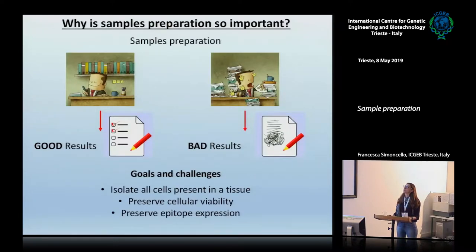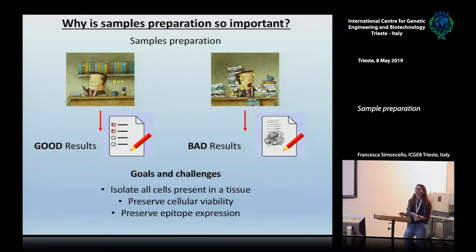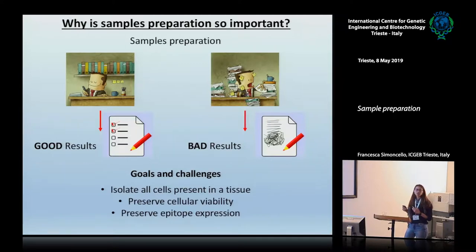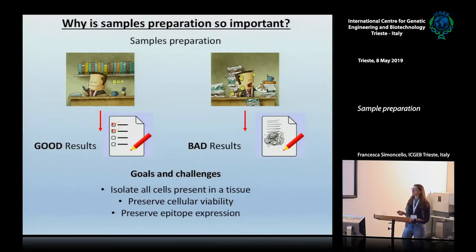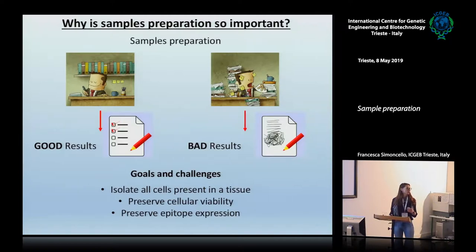Why is sample preparation so important? If you start in a good situation, you will get good results — at least you can try. But if you start in a bad situation, you will get trouble during all the procedures. You will get trouble during the acquisition of your samples and at the end you cannot even trust your results. So during the sample preparation always keep in mind what your goals are: you have to isolate all the cells that are present in the tissue, you have to be careful to preserve the cellular viability and to preserve the expression of your target.